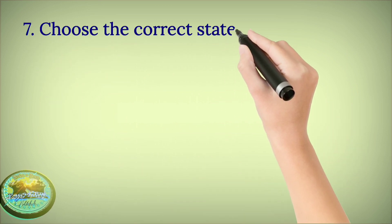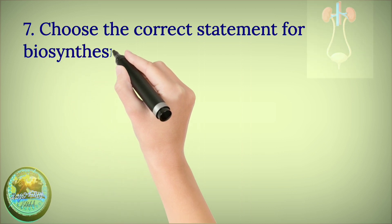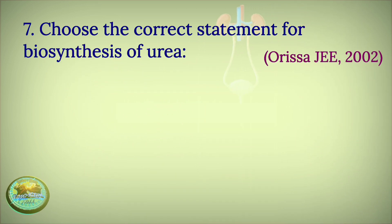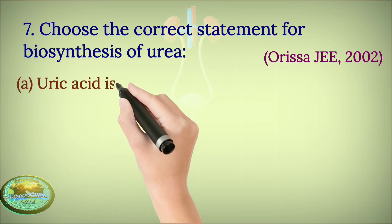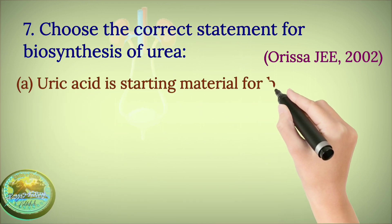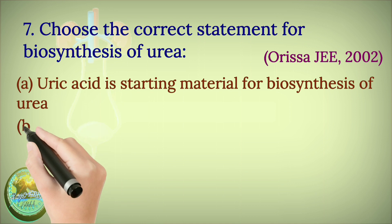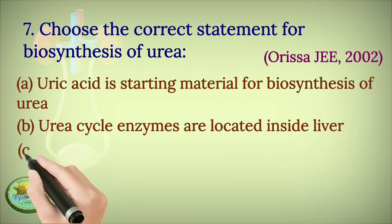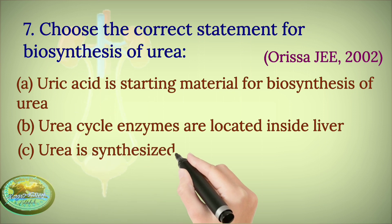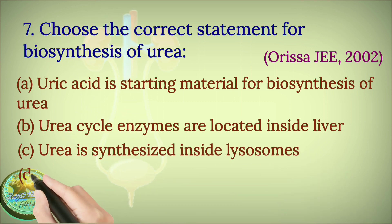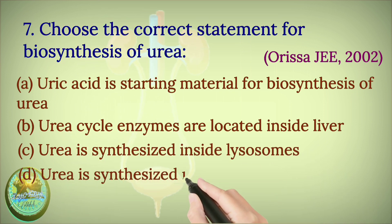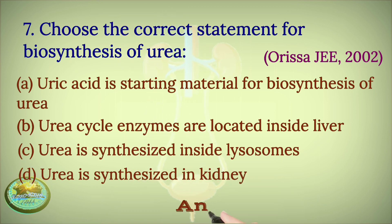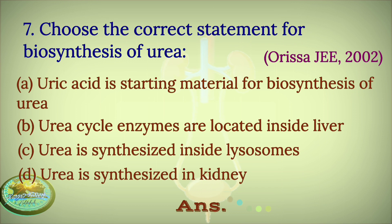Question 7: Choose the correct statement for biosynthesis of urea — Uric acid is starting material for biosynthesis of urea; Urea cycle enzymes are located inside the liver; Urea is synthesized inside lysosomes; or Urea is synthesized in kidneys?